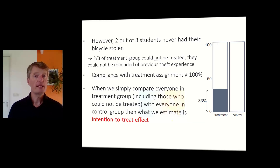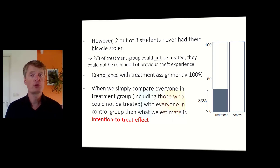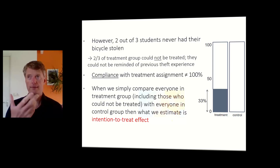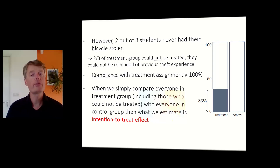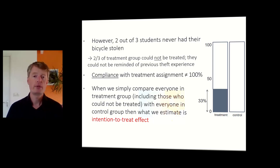But there was one problem: many of you could not be reminded of a prior experience with bicycle theft because you had no prior experience — it had never happened to you. This actually held for two thirds of all students in the treatment group. So treatment compliance — students that actually complied with the treatment — only held for one third, as seen here. Control is 0%, but treatment compliance is only 33%.